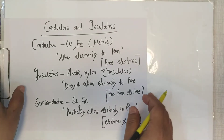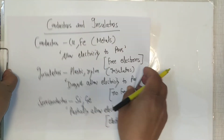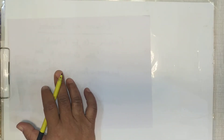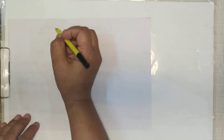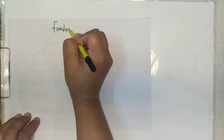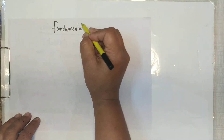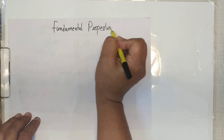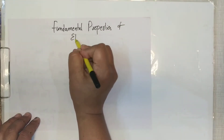When we talk about conductors and insulators, there's also earthing — the sharing of charge to the earth is known as earthing. Now we are coming to the fundamental properties of electric charge.